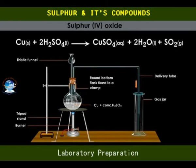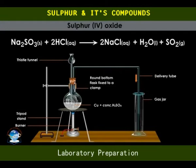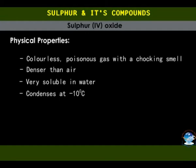Sulfur dioxide can also be prepared using sodium sulfite and hydrochloric acid with a similar apparatus setup. Sulfur dioxide is a poisonous, colourless gas with a pungent choking smell. It is one and a half times denser than air and very soluble in water — one volume of water dissolves 700 volumes of sulfur dioxide. It condenses into a colourless liquid at negative 10 degrees Celsius.